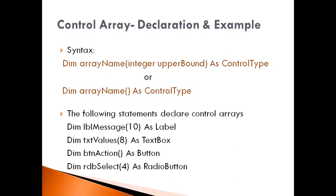After that you give the As keyword and then the control type. In place of control type, you can give the name of any control you want to create an array for. Alternatively, in the second syntax, you write: Dim ArrayName As ControlType. Here you don't give the upper bound in parenthesis, and automatically the number of elements you keep adding will define the total number of elements in the control array.